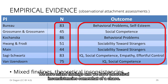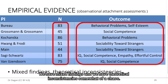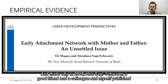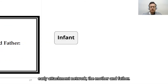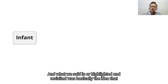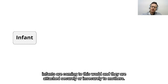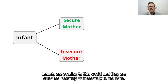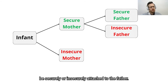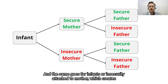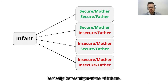We have mixed findings and theoretical inconsistencies — somewhat of a chaos. That's why in 2018, Sagi-Schwartz and myself published a paper titled 'The Unsettled Issue of Early Attachment Network to Mother and Father.' What we highlighted and revisited was the idea that infants come into this world attached securely or insecurely to mothers, but this is not the end of the story. Each infant who is securely attached to mother can also be securely or insecurely attached to father, and the same goes for infants insecurely attached to mother, creating basically four configurations of infants.